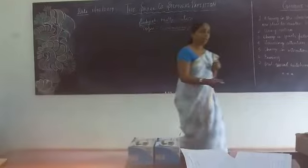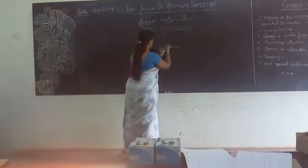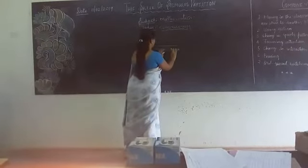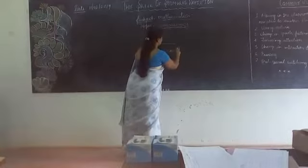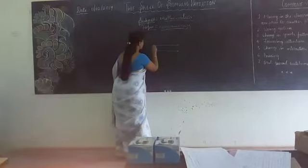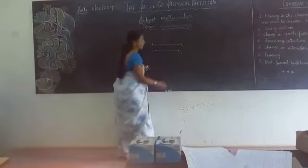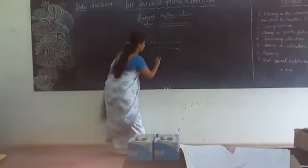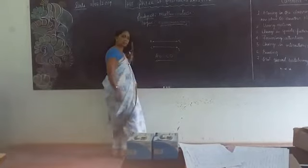Let me draw by hand. I have two lines. I'll name them A, B, C, and D. AB is equal to CD. Will you accept? Yes.